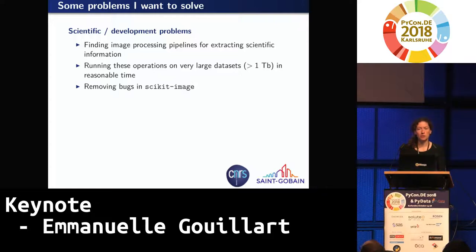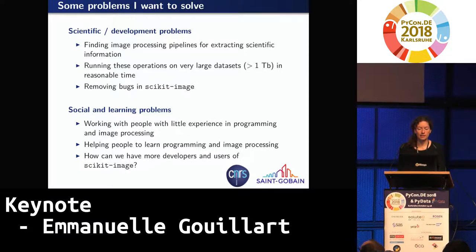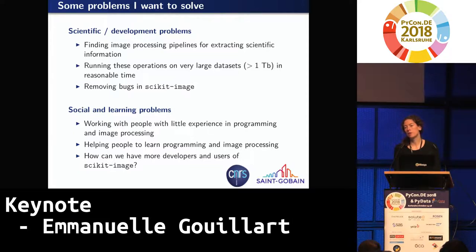In this work, I have several problems I want to solve. Some are scientific or on the development side — finding the right pipelines and algorithms, performance problems running operations on large datasets, being sure that my code does the right thing, that there are no bugs in scikit-image. However, a large fraction of the challenges comes from social and learning problems, because I'm not the only one doing this in my lab. I work with people who mostly have a physics or chemistry background and didn't learn a lot about programming or algorithms. A very important problem is how to help people learn programming and apply mathematics and image processing, even with little prior experience.